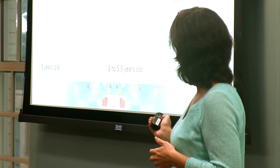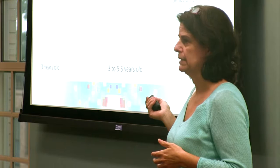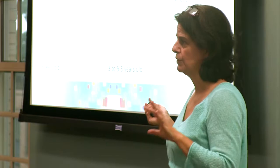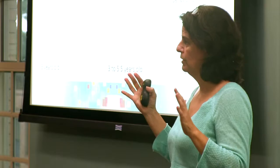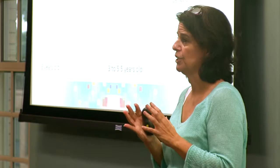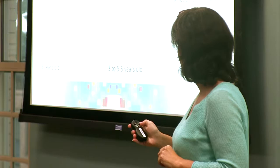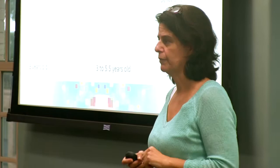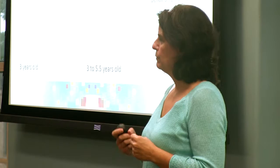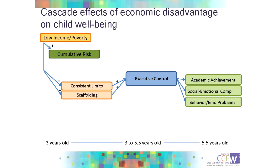Parenting did mediate — almost fully or completely — the effects of income and cumulative risk on children's self-regulation, pretty much wiping out the direct effects. That's consistent with the idea that more distal factors have their impact through proximal factors, and that proximal relationship factors in a young child's life have the biggest impact on development. The measures that predicted the prefrontal cortex aspect of executive control were really the parts of parenting representing structure, guidance, and predictability: consistent limit setting — making expectations clear and following through — and scaffolding.